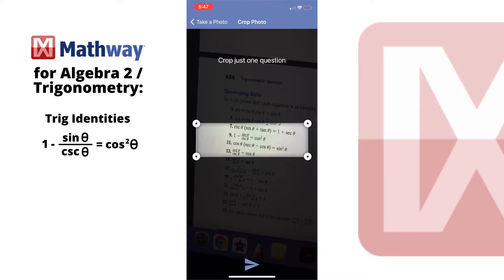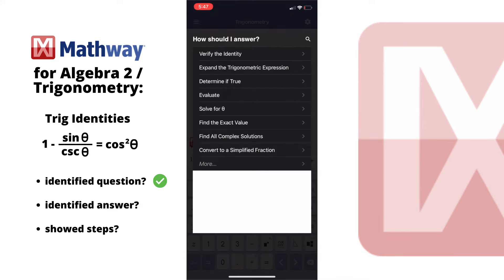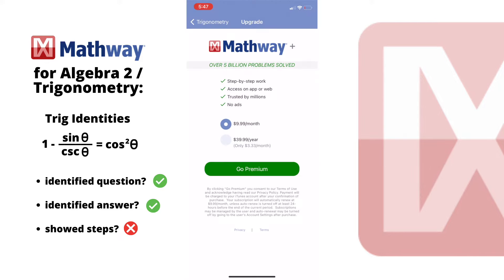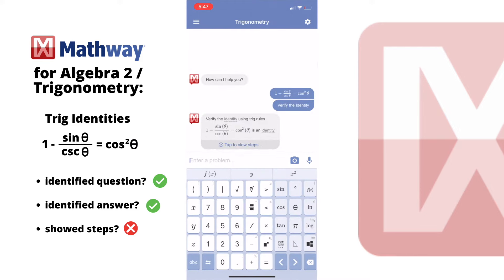I also chose a problem on validating Trig identities. Again, it asks you what you want to do with the expression. I said verify the identity and it's verified and that's it, which is so frustrating because it's giving students who can afford the $10 monthly subscription an advantage at class, but I guess that's how it is with all things in life, unfortunately.